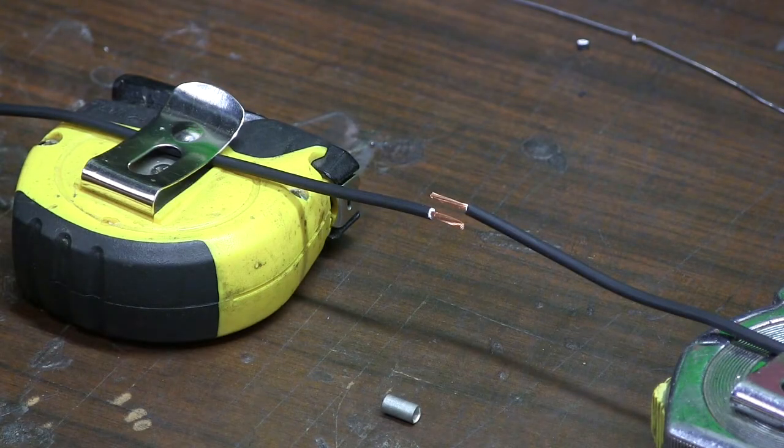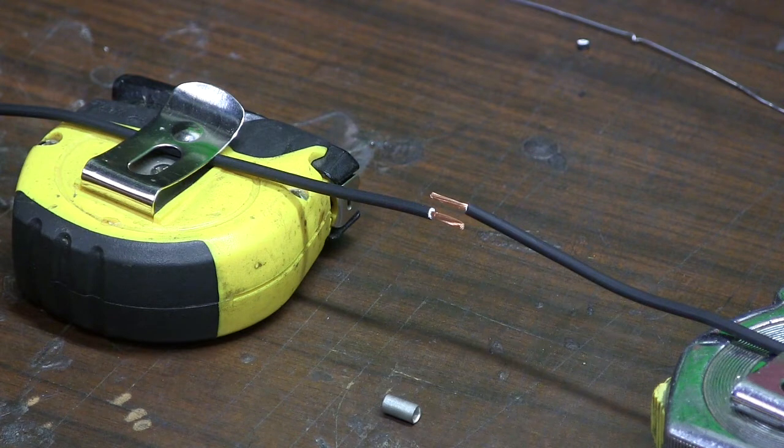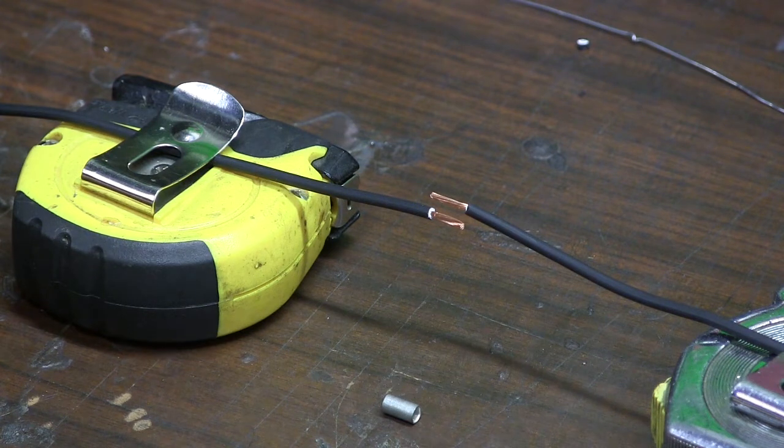Okay, when you're joining two wires together without a terminal, we recommend that you use a soldering barrel. So we're going to show you that technique first.